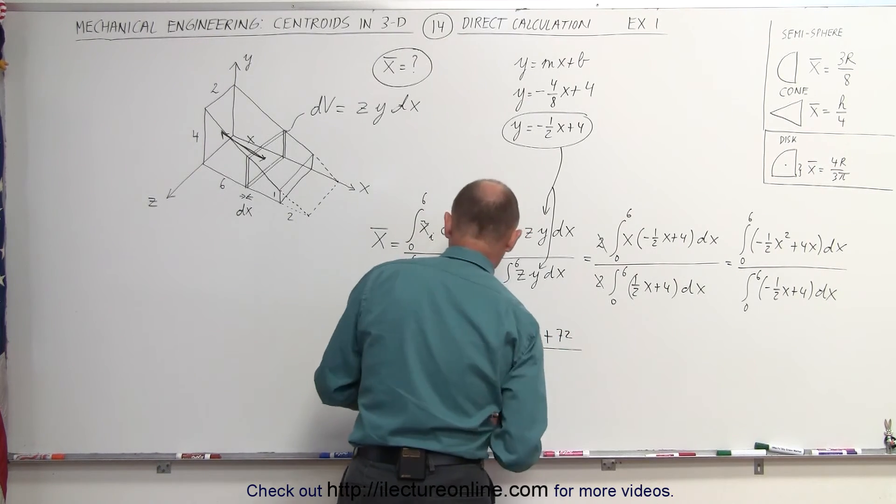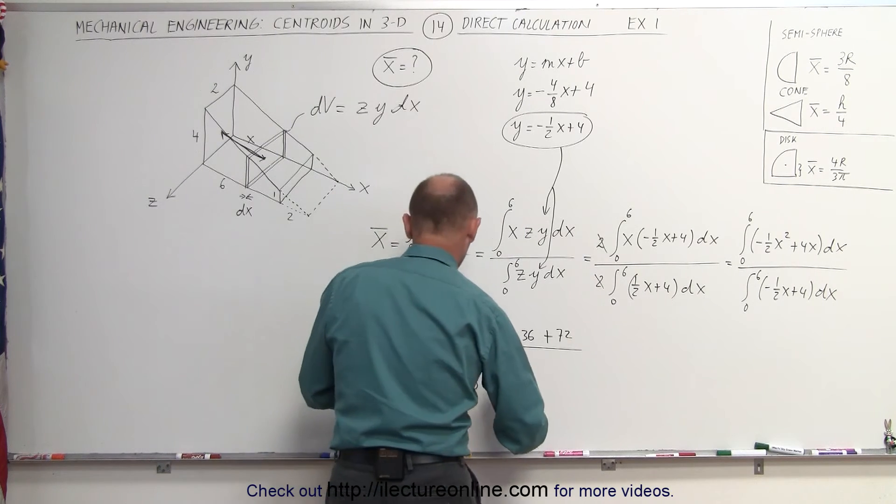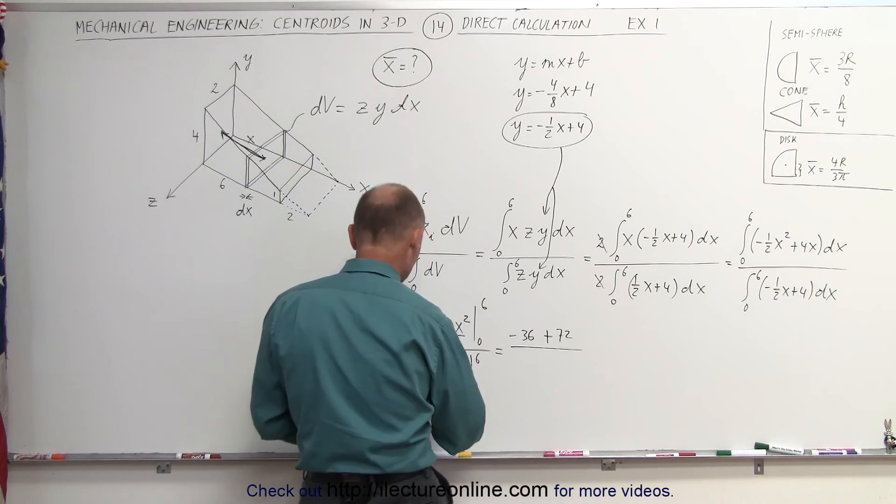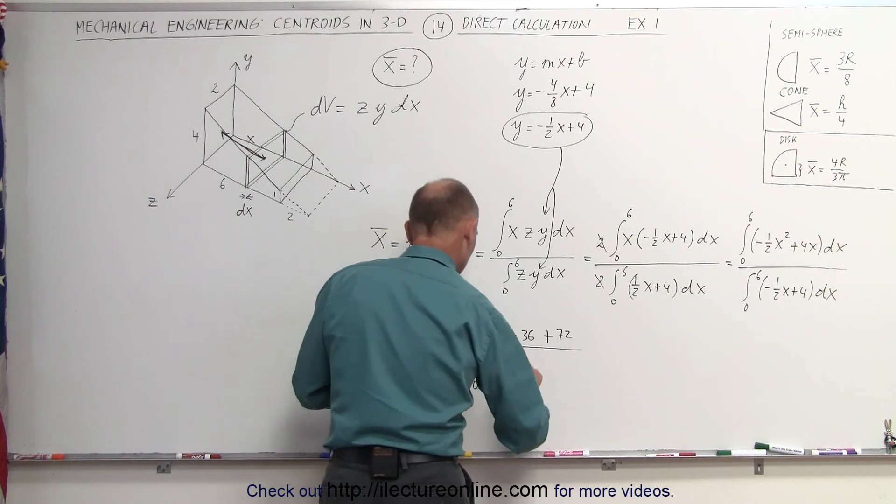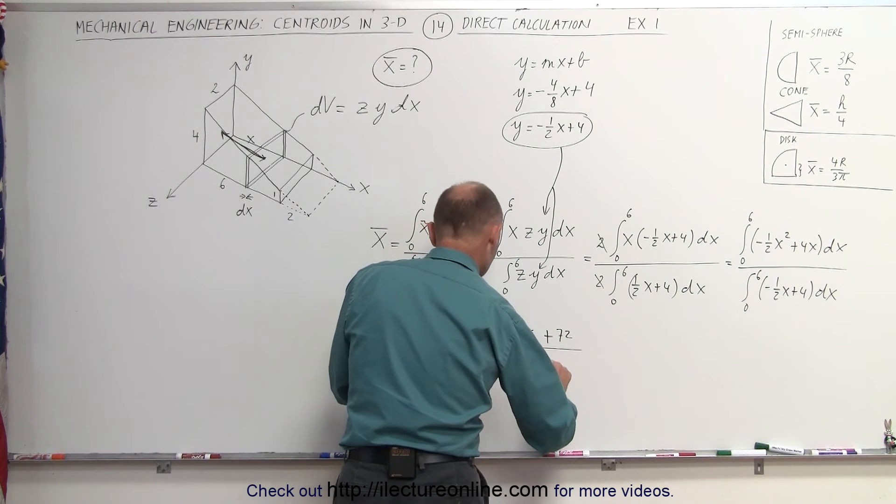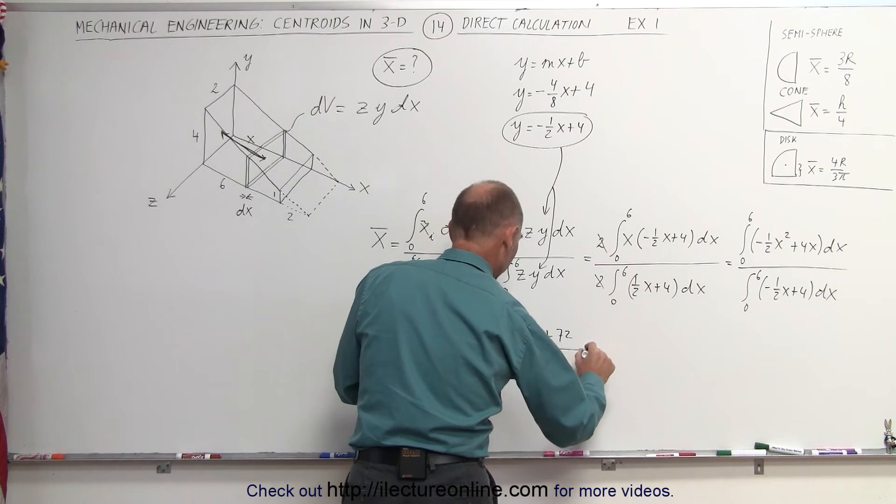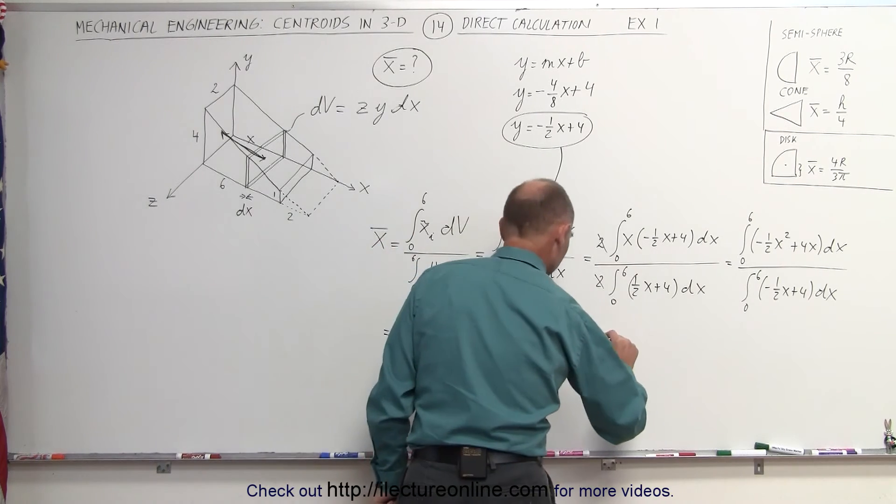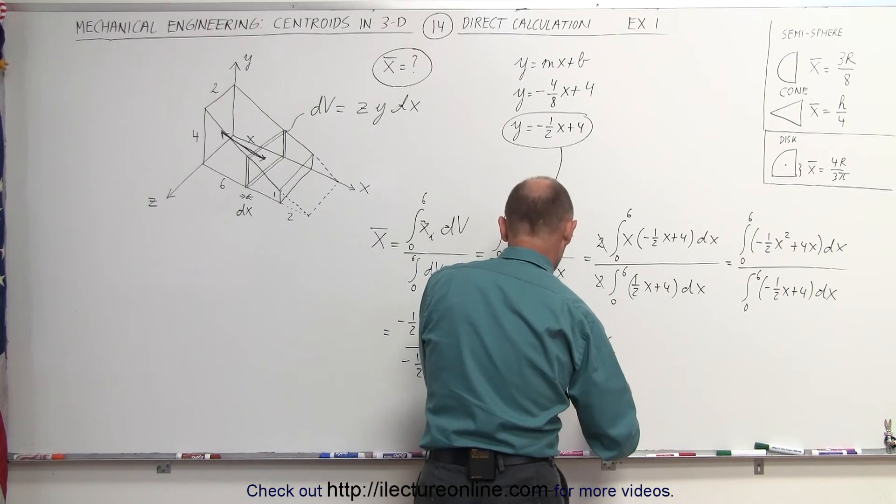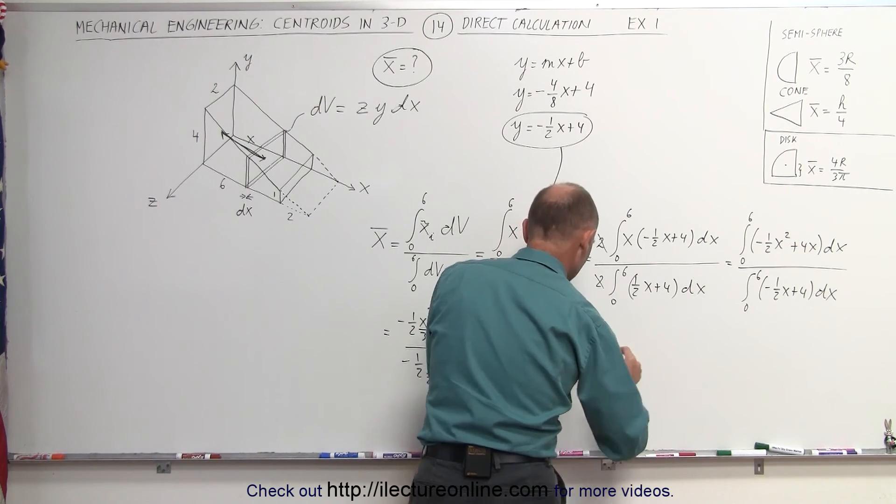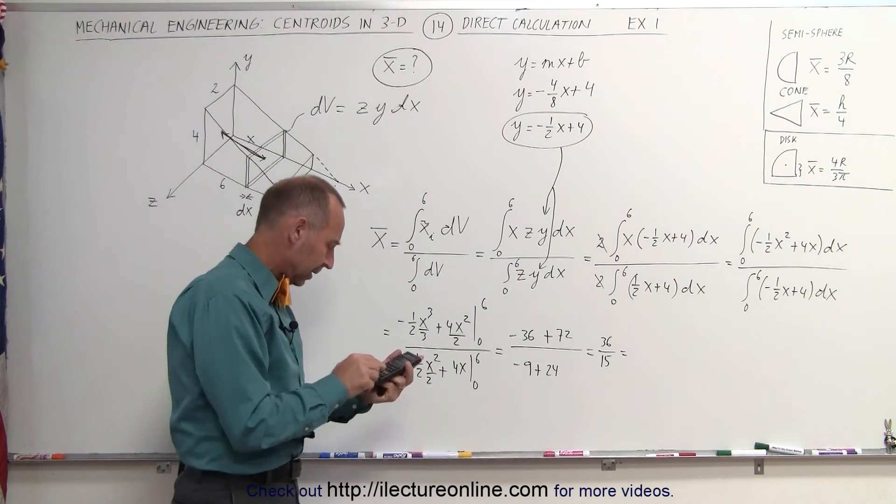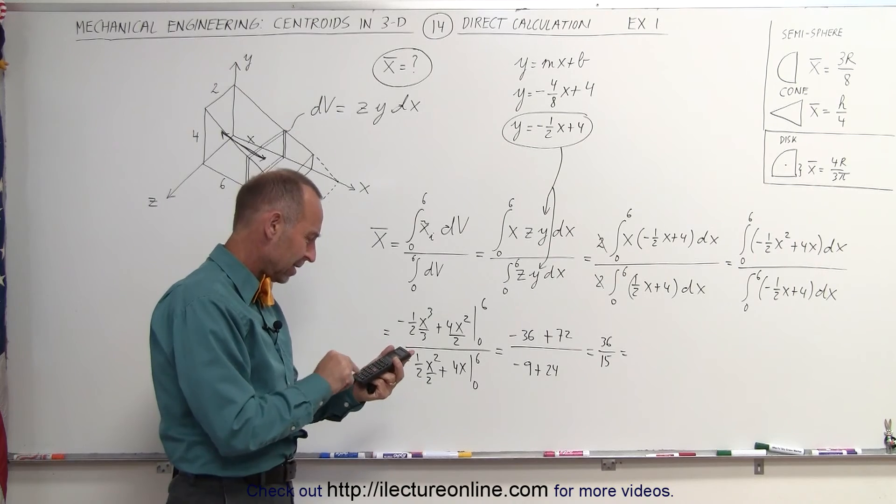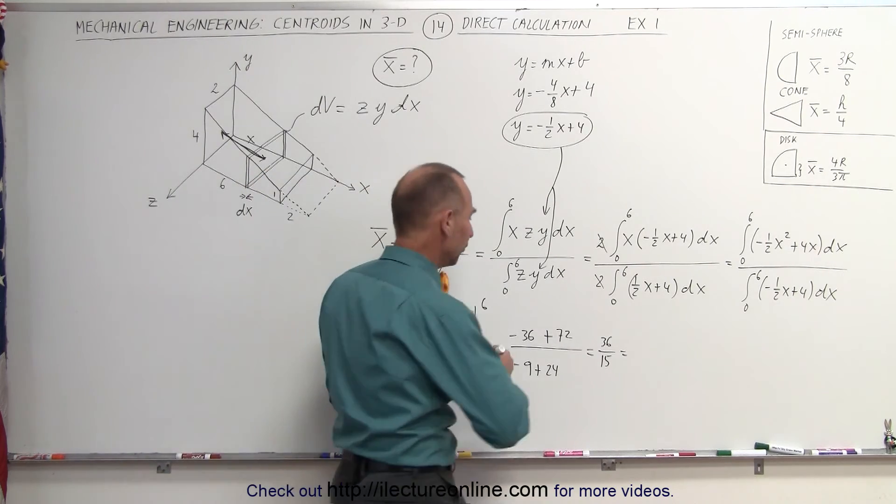all divided by, here we get 36 divided by 4, which is, and I forgot my minus sign, can't forget my minus sign, that would be a minus 9 and plus 24. So the numerator becomes 36 divided by the denominator, which is 15, and let's see what that's equal to, that looks like, 36 divided by 15, yes it is, 2.4,